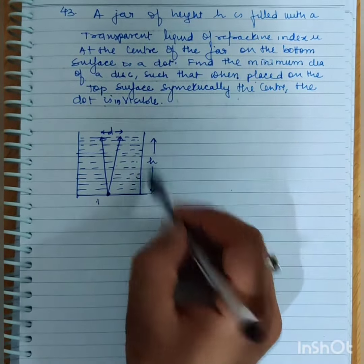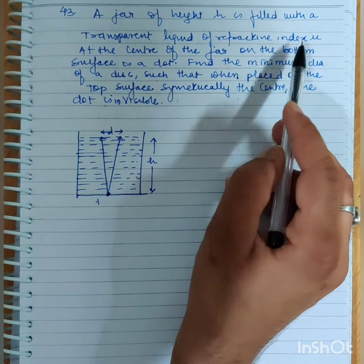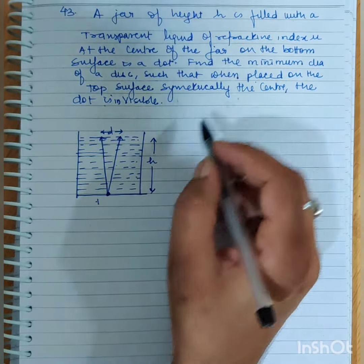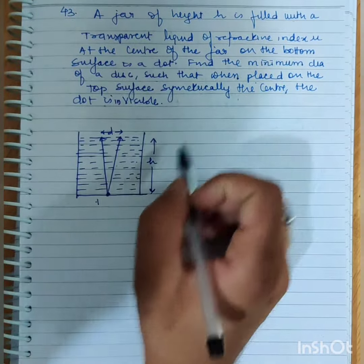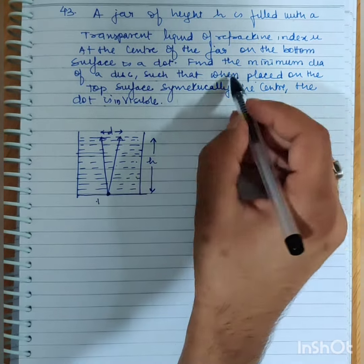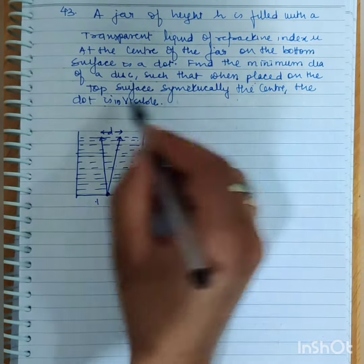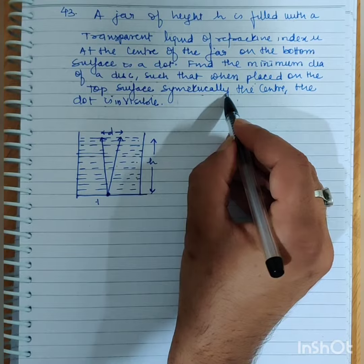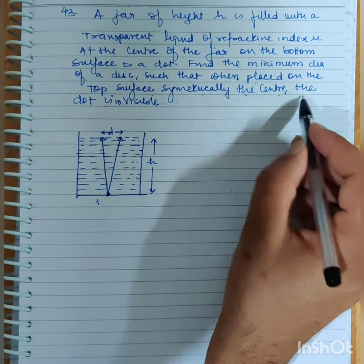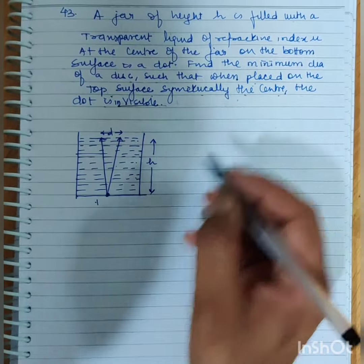A jar of height h is filled with a transparent liquid of refractive index mu. At the center of the jar on the bottom surface is a dot. Find the minimum diameter of the disc such that when placed on the top surface symmetrically at the center, the dot is invisible.